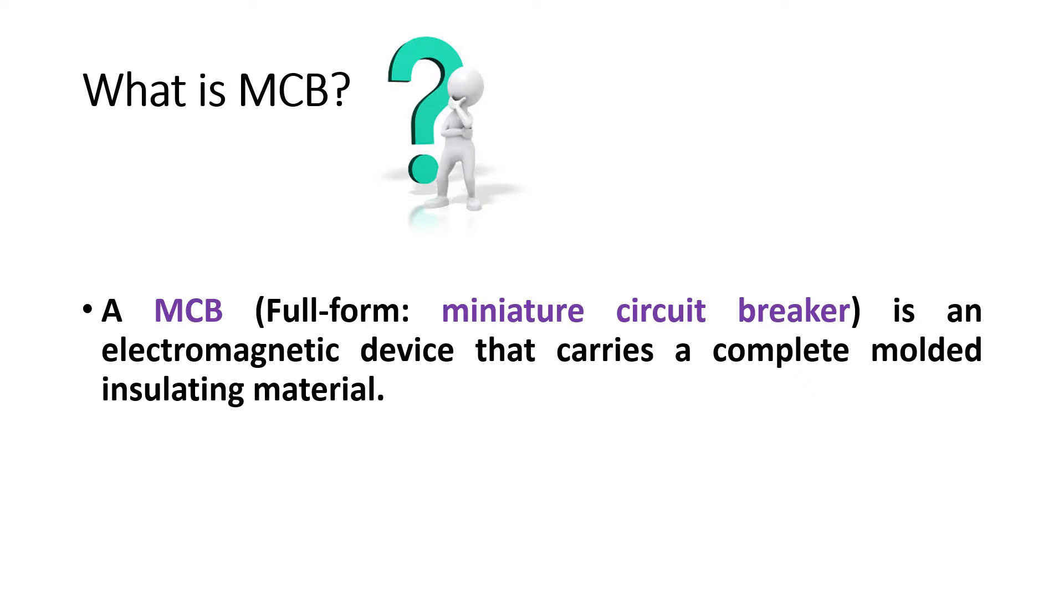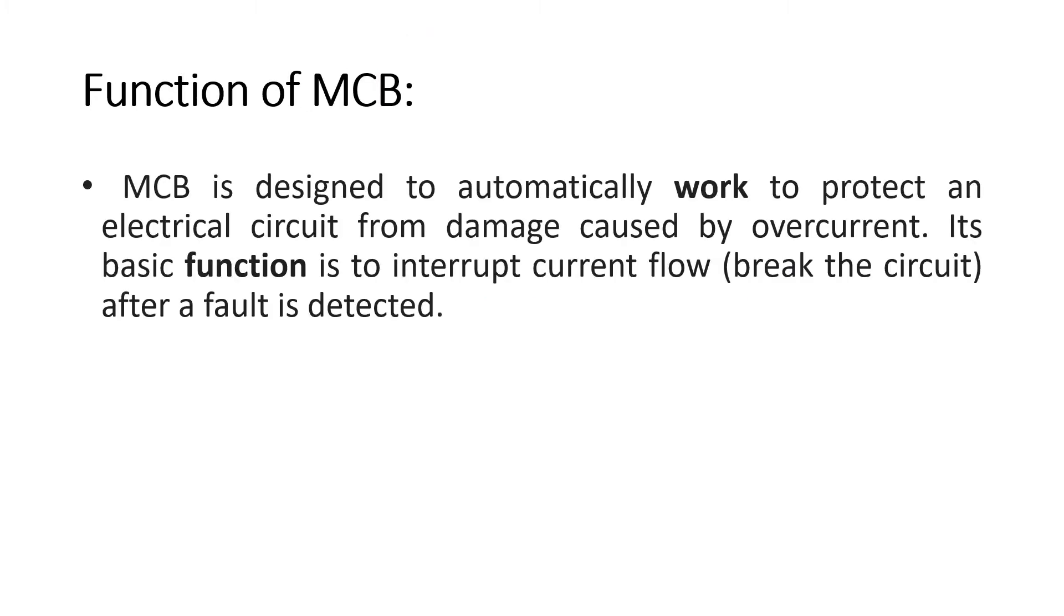You all are well familiar with the word MCB. So what is MCB? A MCB or miniature circuit breaker is an electromagnetic device that carries a complete molded insulating material. MCB is designed to automatically work to protect an electrical circuit from damage caused by over current. Its basic function is to interrupt current after a fault is detected. Fault may be short circuit fault or overload.